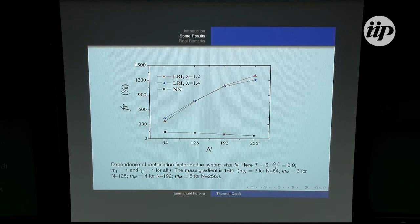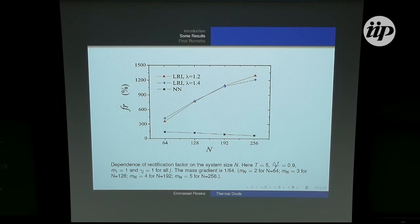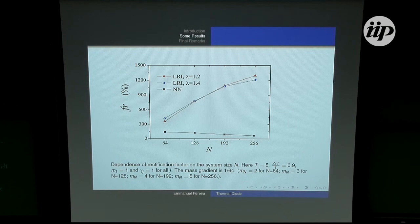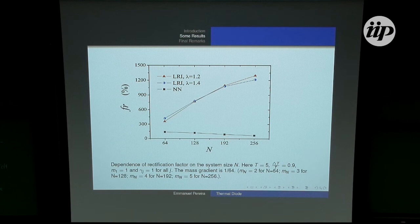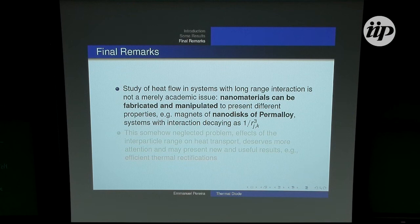Without the graded structure, the rectification decays fast. But with long-range interactions, the rectification factor is increasing with system size, at least up to N=1000 simulated sites. This shows that long-range interaction can be used to significantly increase the rectification factor.